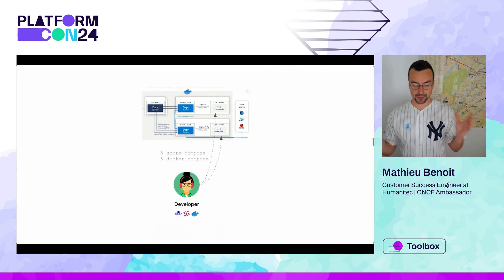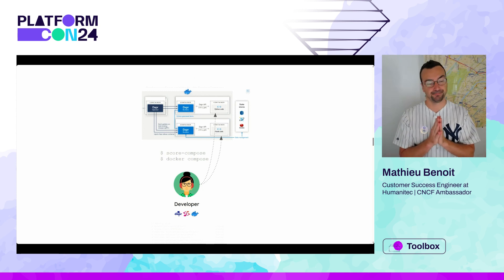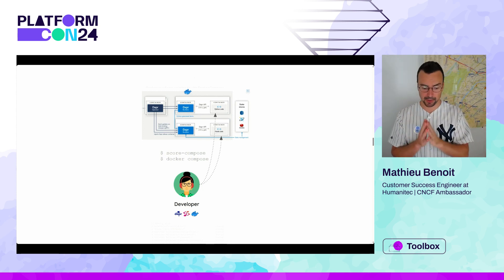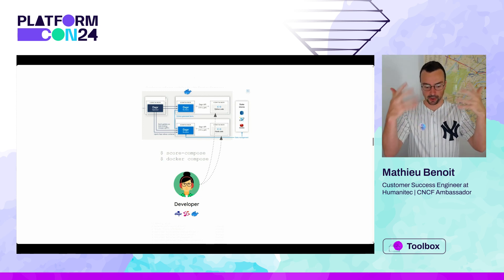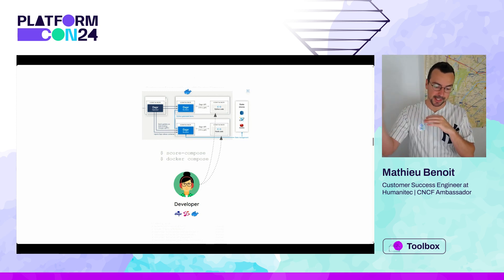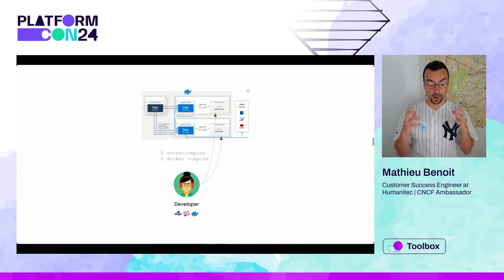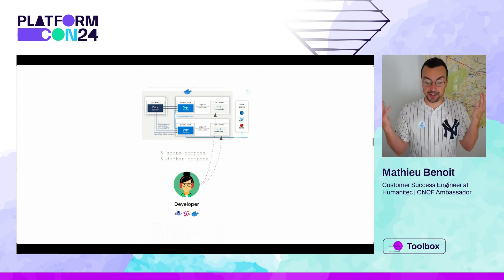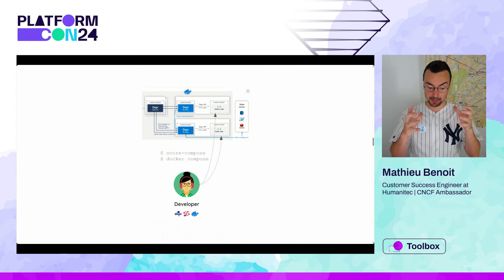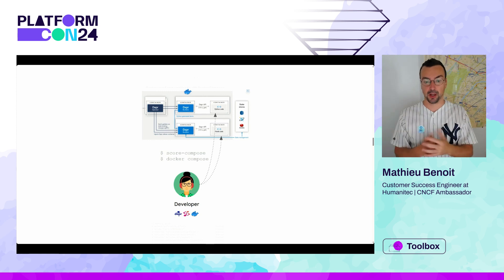I want to start with a quick demo with two applications — two workloads. One is a Node.js application with the Dapr SDK embedded, and the other is a Python app. The Python app generates orders to the Node app, and the Node app serializes those orders in Redis as a Dapr state store — it's already Dapr-enabled. I want to show how I can describe the intent to deploy these two applications, starting with how to deploy locally with Docker Compose for the developer inner loop.